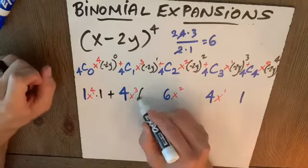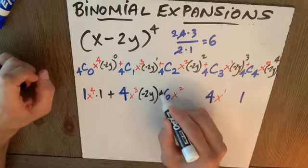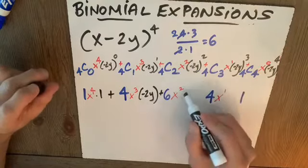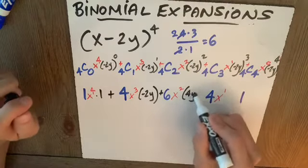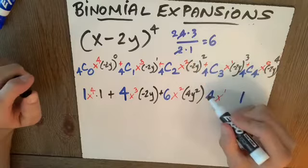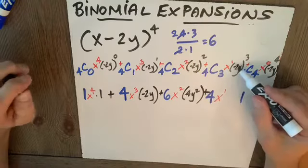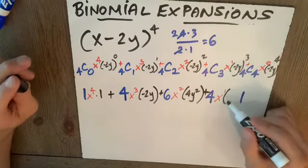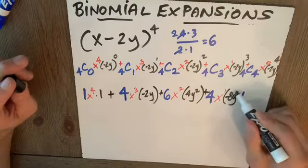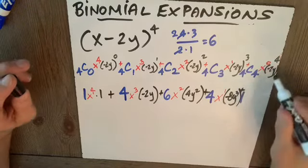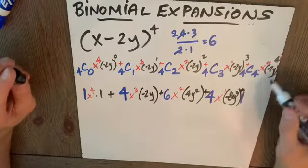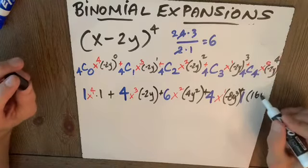Negative 2y to the 1 is negative 2y. Negative 2y squared is going to be 4y squared. That's negative 2y times negative 2y. Here, negative 2y cubed is negative 8y cubed. And lastly, I have negative 2y to the fourth, which is 16y to the fourth.